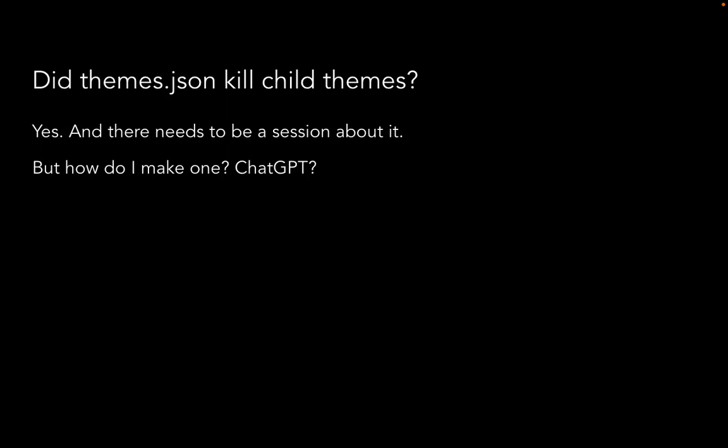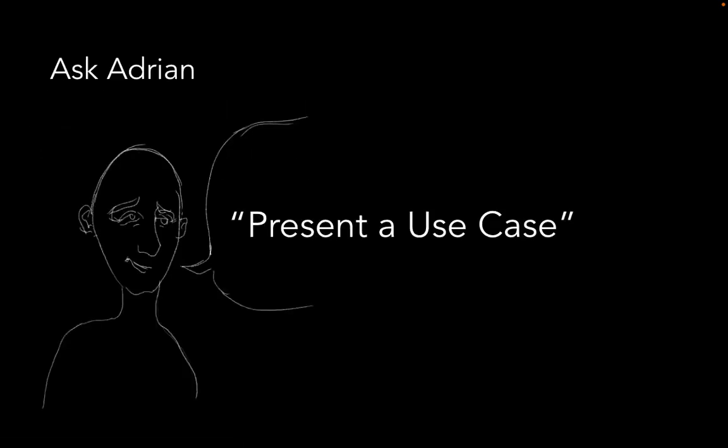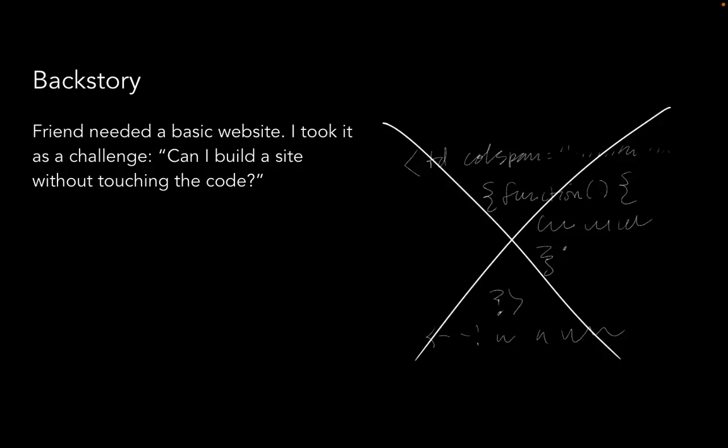I've been running around like a madman doing too many things in the last week, which is usually when I put slides together. I thought about using ChatGPT to put it together, but then my friend Adrian said just present the use case. Why don't I tell you how I got to this point where I'm so frustrated with theme.json and child themes?